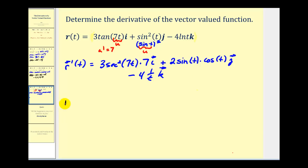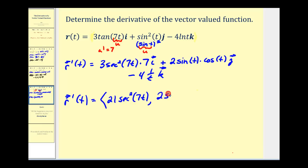Let's clean this up, writing it in component form. The x component is 21 secant squared 7t. The y component is 2 sine t cosine t. The z component is negative 4 over t. I hope you found these examples helpful.